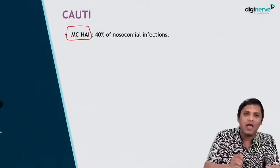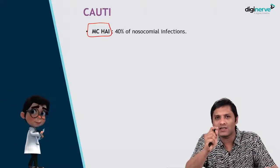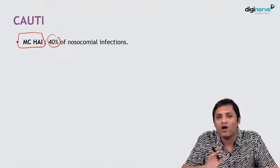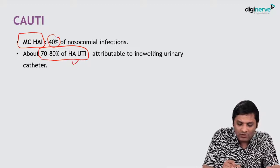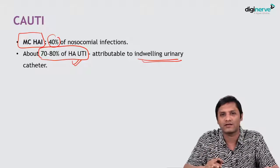Let us discuss CAUTI in detail. Catheter-associated urinary tract infection is regarded as the most common HAI among the 4 major HAI types we have discussed. CAUTI accounts for 40 percent of all nosocomial infections. Around 70 to 80 percent of hospital-associated UTI is attributed to the presence of a urinary catheter.